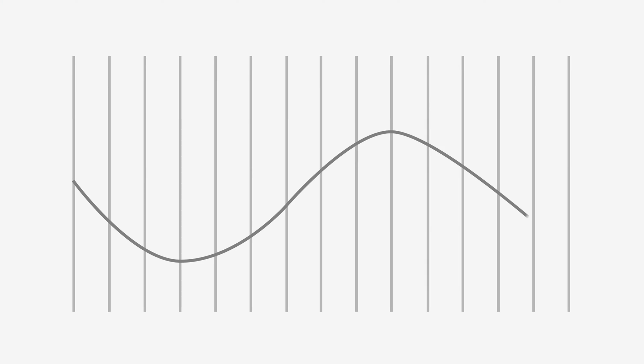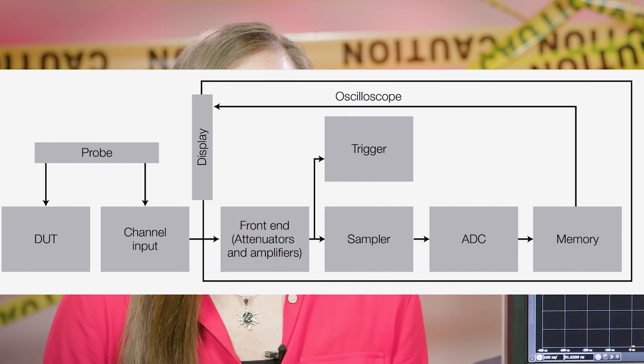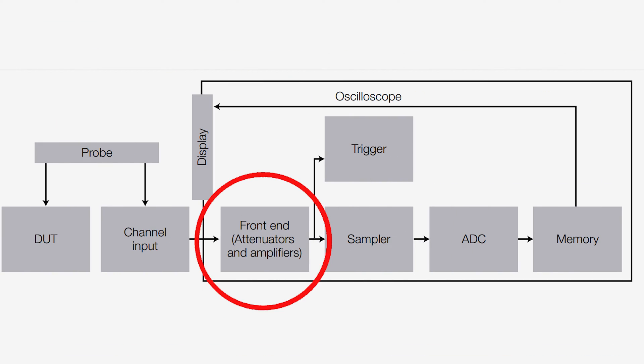Modern oscilloscopes convert your analog signal input into a digital signal so that you can see it on the display. The conversion works by taking data points or samples of your analog signal and using those points to reconstruct the waveform digitally. You can see the path that your signal takes through the oscilloscope in this animation. Once your signal reaches the front end of the scope, the sampler will collect data points. Those data points will feed into the analog to digital converter, or ADC, where they're converted to digital values.